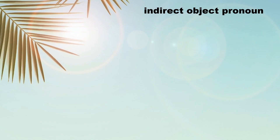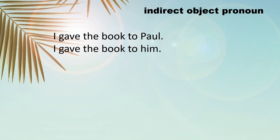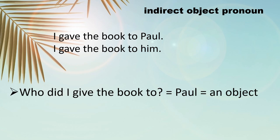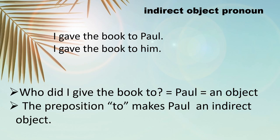Let's move on to the indirect object pronoun. For example: I gave the book to Paul. I gave the book to him. You can see that there is a 'to' between 'book' and 'him', and that is going to make it indirect. Who did I give the book to? Paul. Paul remains an object, but it's indirect because of the preposition 'to'.